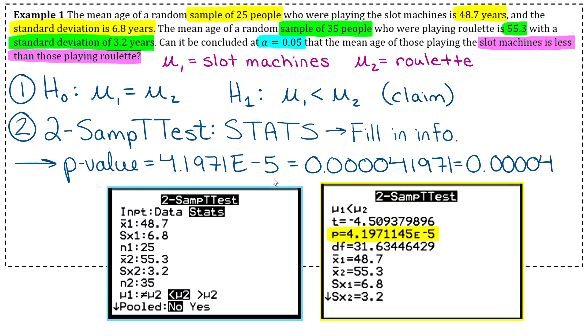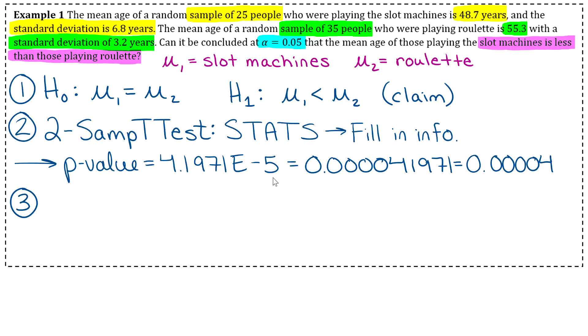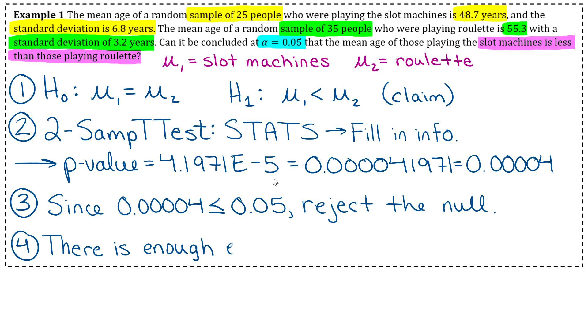Okay, and then steps three and four are nothing new at all. They're going to be the exact same that we already know from our other p value cases. So for step three, we're just going to compare our p value with alpha. So 0.00004 is definitely less than or equal to 0.05. So that means that we reject the null hypothesis. And if we're rejecting the null and the claim is in the alternative, then we say there is enough evidence to support the claim.